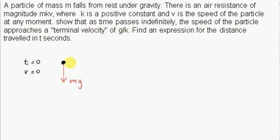Before we do any calculations, let's look at a picture of what's going on. At t equals 0, the particle is at rest, so its speed is zero. The particle is dropped from rest. The forces acting on the particle: we assume the particle is dropped near the earth's surface, so its weight is given by mg. We also need to consider air resistance, which acts opposing the motion of the particle, vertically up, with magnitude mkv.